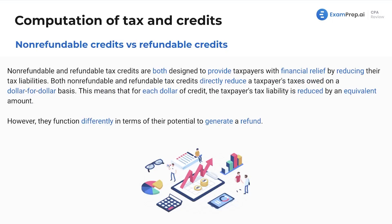We've got two types of credits: non-refundable credits and refundable credits. Both of these are designed to provide taxpayers with financial relief by reducing their tax liabilities. Both non-refundable and refundable directly reduce a taxpayer's taxes owed on a dollar for dollar basis. For each dollar of credit, the taxpayer's tax liability is reduced by an equivalent amount. However, these function differently in terms of their potential to generate a refund.